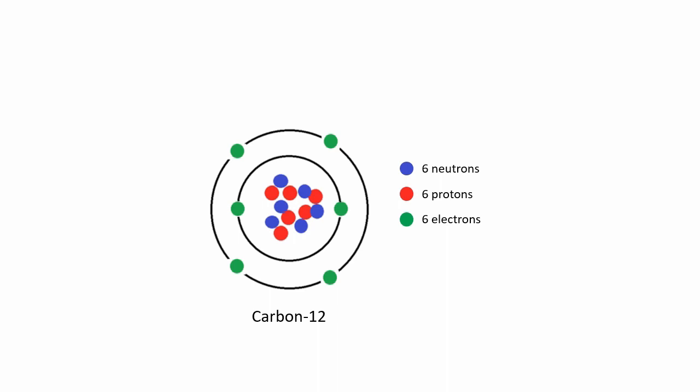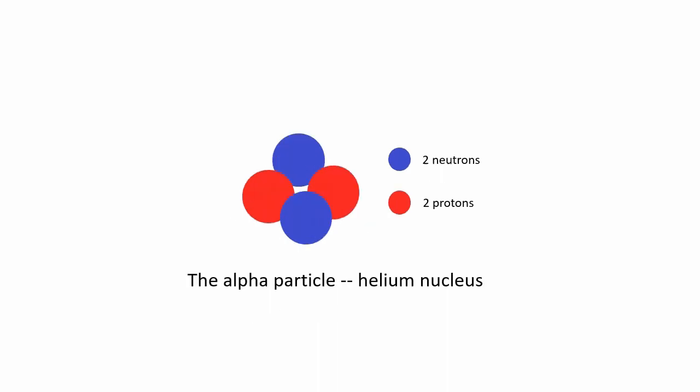To understand carbon's formation, we must first understand the alpha particle. An alpha particle is made of two protons and two neutrons. It is a helium atom with no electrons. In stars, helium atoms are abundant. This is good news for humans.